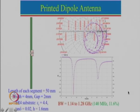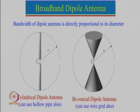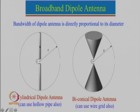We can increase the bandwidth of the dipole antenna by increasing the diameter. The bandwidth of the dipole antenna is directly proportional to its diameter. However, we cannot keep on increasing the diameter to a very large value and there is a limit to the absolute maximum value of the dipole antenna diameter.